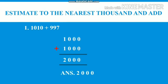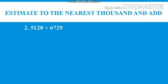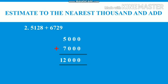Like this we will do the second question also. Our second question is 5128 plus 6729. Now again we will estimate the numbers which is given. 5128 is nearer to 5000 and 6729 is nearer to 7000. So now we will add 5000 plus 7000 and we will get 12000. So our answer will be 12000.